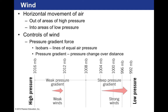Wind is simply the horizontal movement of air parallel to the Earth's surface. Wind always moves out of areas of high pressure towards and into areas of low pressure, and the mechanism that controls wind is called the pressure gradient force. Just like isotherms indicate changing temperature on weather maps, isobars are lines of equal air pressure, and the pressure gradient is simply the pressure change over a distance.